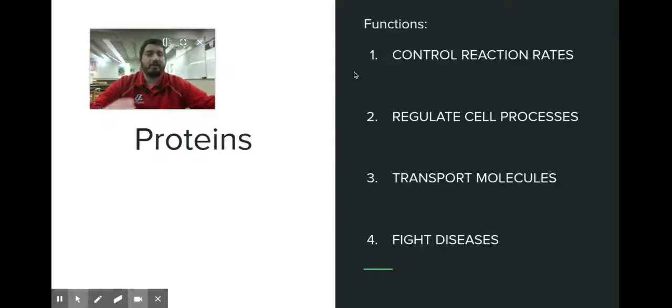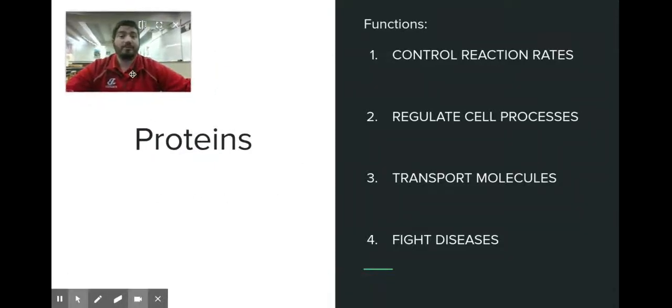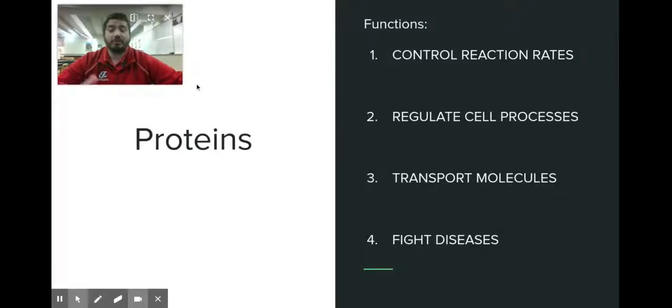So what are the jobs of proteins? We have four major jobs. The first one is to control the rate of reactions in the body. Your cells and bodies are always doing chemical reactions. Your proteins are pivotal in controlling how fast or how slow those reactions happen. They also regulate cellular processes, like an on and off switch for doing different processes that your cells need to do to survive. They also help transport molecules. This is really big when we talk about getting stuff in and out of a cell. And finally, they help to fight disease. Especially right now with coronavirus, COVID-19, your proteins are really crucial in your immune system and helping you fight off disease and bad things.